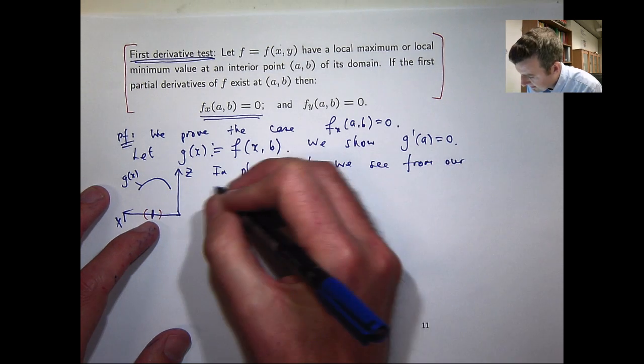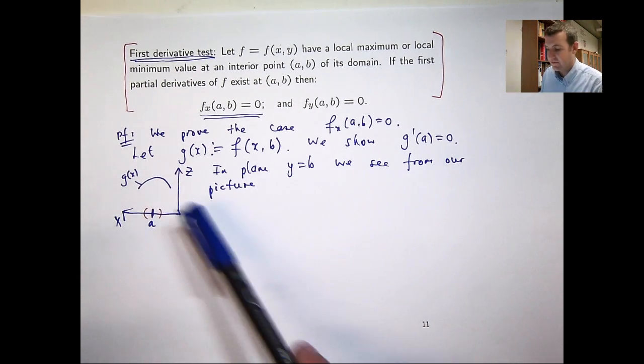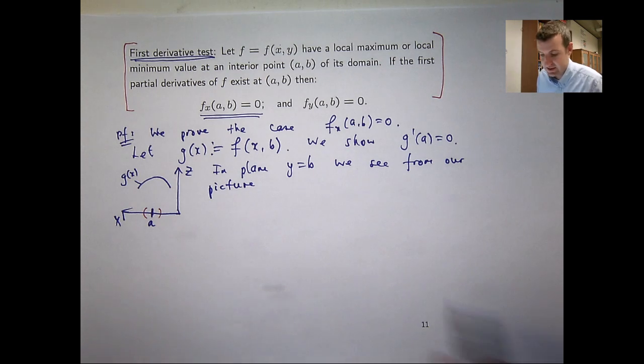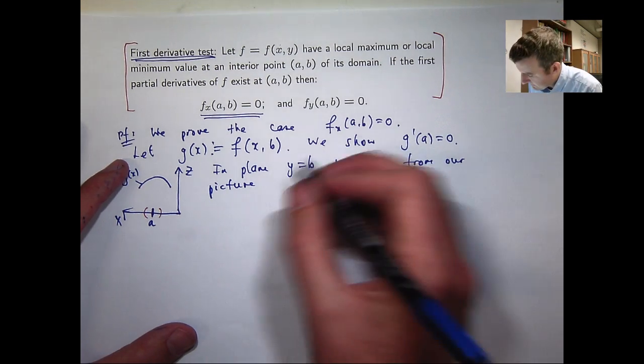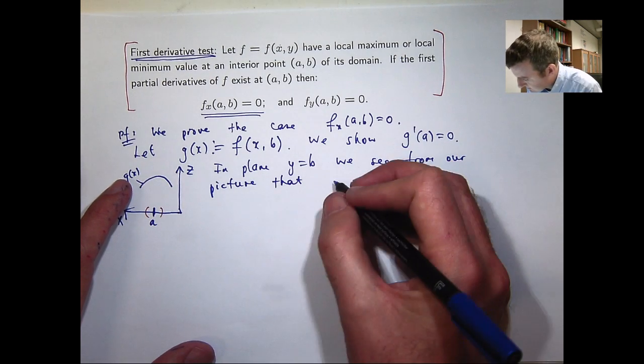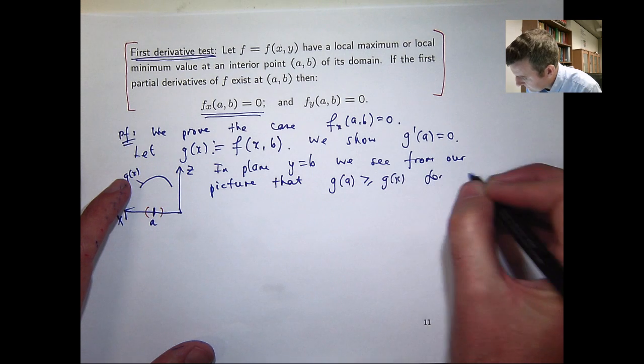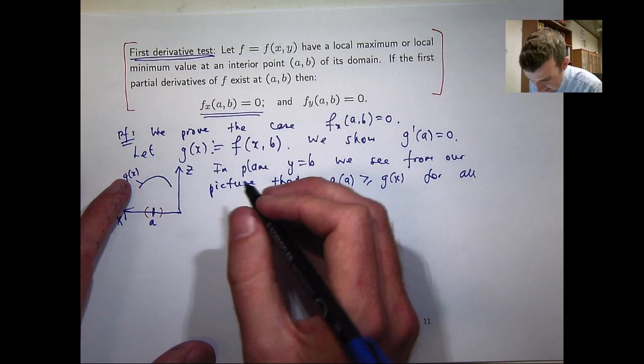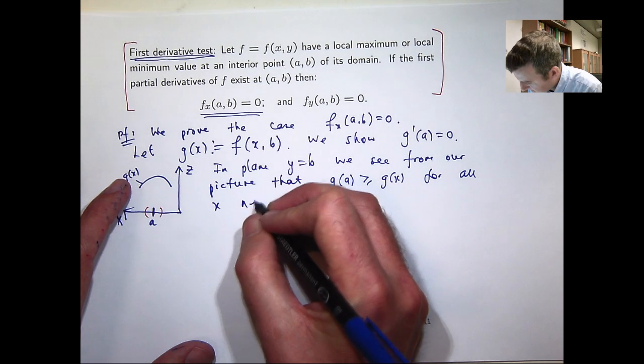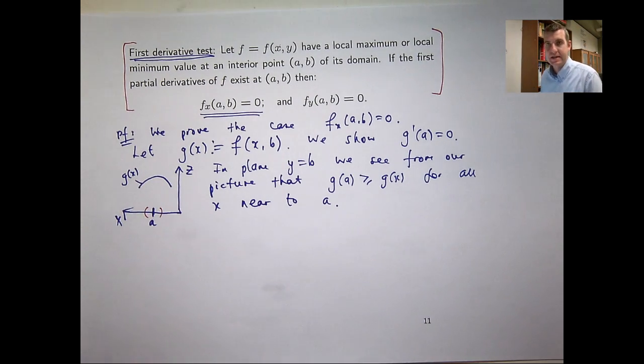So we see from a picture, now I'm just discussing the case of a local maximum. Local minimum you would just sort of reverse the inequalities that I'm going to have. So g(a) is greater than or equal to g(x) for all x near to a. Now I haven't made that precise but I think that's reasonably clear what I mean.